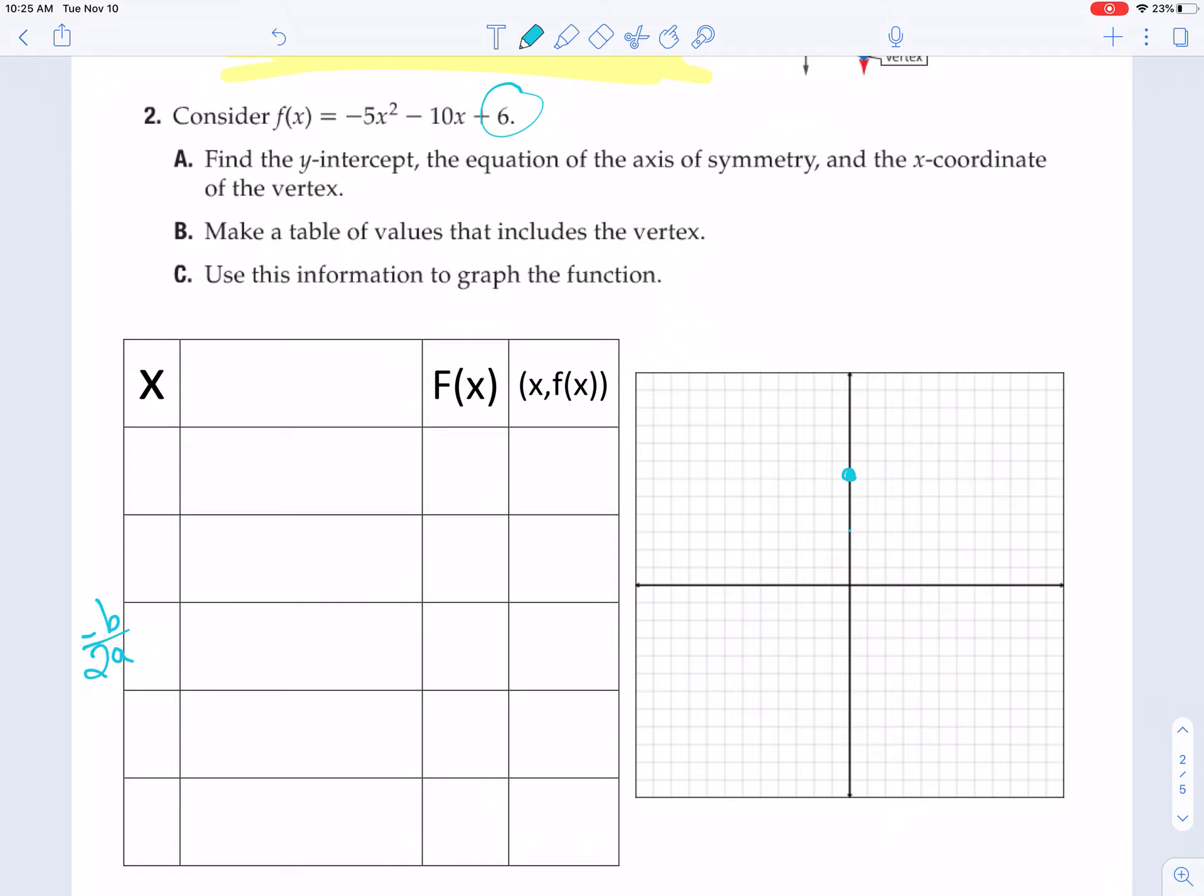So for my function, negative 5x squared minus 10x plus 6, my b in this case is negative 10, right? Because it's ax squared plus bx, plus c. So if it's negative b and b is negative 10, that's going to end up giving me a double negative, which is just 10. And then it's 2 times a, and a in this case is negative 5. So I end up with 10 divided by negative 10, which is negative 1. That's how you know what to put in the middle of your table.